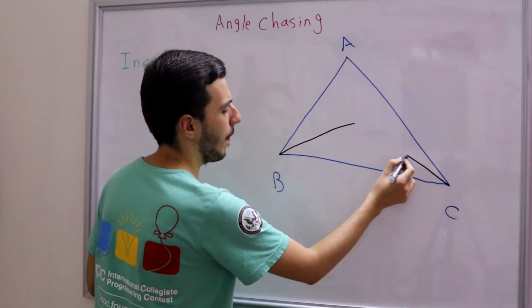We want to find angle BIC — and also the others. Because the line from C is an angle bisector, it bisects angle C, so both halves are C/2. Similarly, the bisector from B means both angles there are B/2. So we've immediately found these two angles.